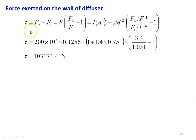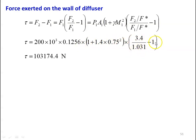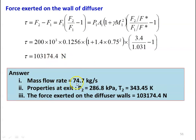Force exerted on the wall of the diffuser: tau equal to F2 minus F1, which is F1 into (F2/F1 minus 1). F1 is the impulse function at inlet, P1 A1 into (1 plus gamma M1 square). Dividing by F* both numerator and denominator: F2/F* divided by F1/F* minus 1. Substituting: 200 into 10 power 3 into 0.1256 into (1 plus 1.4 into 0.75 square) into (3.4 divided by 1.031 minus 1), giving tau equal to 13174.4 Newton. Answers: mass flow rate equal to 74.7 kilograms per second, exit pressure P2 equal to 286.8 kilo Pascal, exit temperature T2 equal to 343.45 Kelvin, force exerted on diffuser wall equal to 13174.4 Newton.